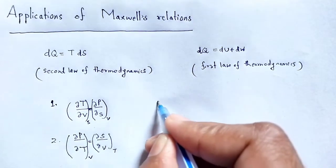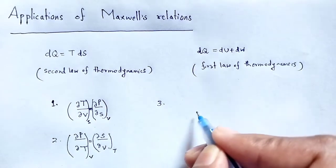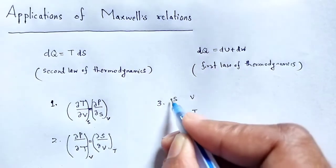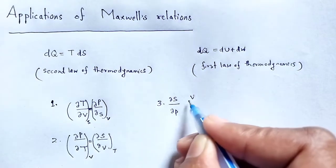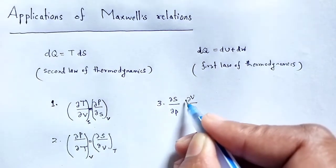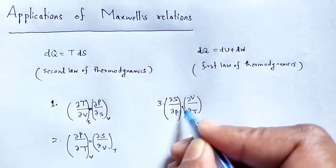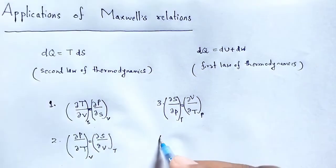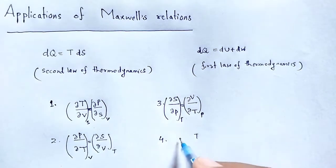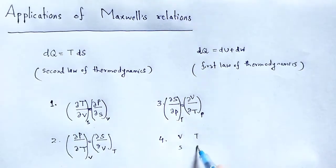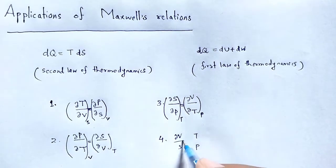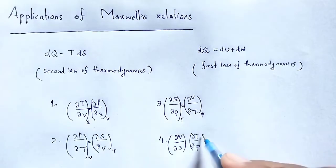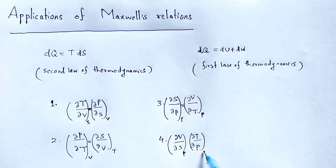Next, the third one: T starts here — Tendulkar Very Special Person — giving del S, del P, del V, with temperature constant on one side and temperature constant on the other. The fourth one — Tendulkar Very Special Person — gives del V, del S, del T, del P, at constant pressure and constant entropy.